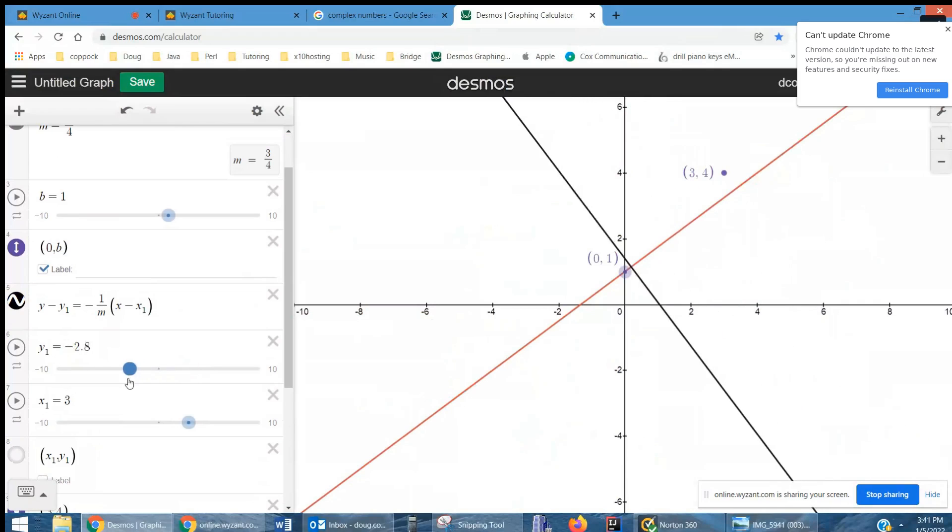If I change those coordinates, of course, the line doesn't pass through, but it still has the property that's perpendicular to the red line because its slope is the negative reciprocal. So if I change this back to 3,